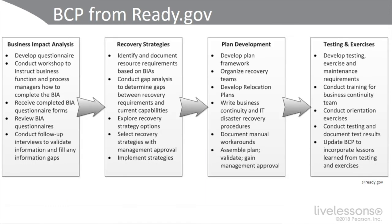From ready.gov, there's a table showing four main phases. First, impact analysis, where you use the Delphi method, develop questionnaires, conduct workshops, receive completed answers from your team and stakeholders, review questionnaires, and do follow-up interviews looking for gaps. That leads to recovery strategies: identifying and documenting resources based on the BIA, conducting gap analysis, exploring recovery strategy options, selecting strategies with management approval, and implementing them.